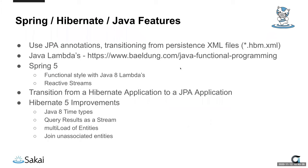As everybody knows, some of the large frameworks that Sakai is based on are obviously Spring, Hibernate, and it's built in Java. In Sakai 21, we've upgraded these libraries from the previous version in Sakai 20. They are now at Spring 5 and Hibernate 5.3. We're still on Java 8, which will likely get upgraded in the next version, probably to Java 11.